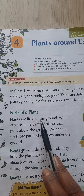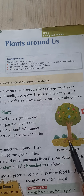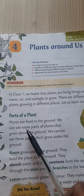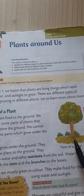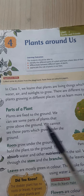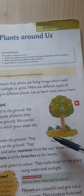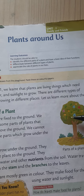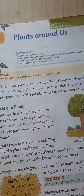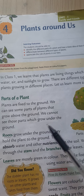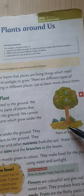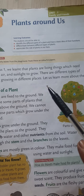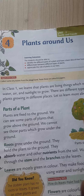Plants are fixed to the ground. The roots hold the soil tightly and make the plant stand straight. We can see some parts of the plant that grow above the ground. The roots grow below the ground — you can't see them. The stem, leaves, branches, flowers, and fruits grow above the ground and are visible. We cannot see the roots because they grow under the ground. Roots grow under the ground and they hold the plant to the ground.